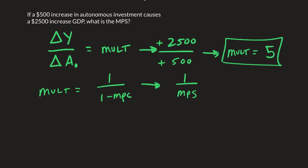Why is this the case? Let's take a quick aside. Remember that MPC plus MPS has to equal 1. So therefore, if we subtract MPC from both sides, MPS is going to equal 1 minus MPC.